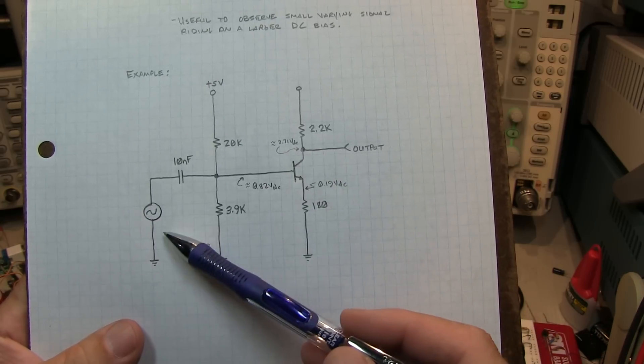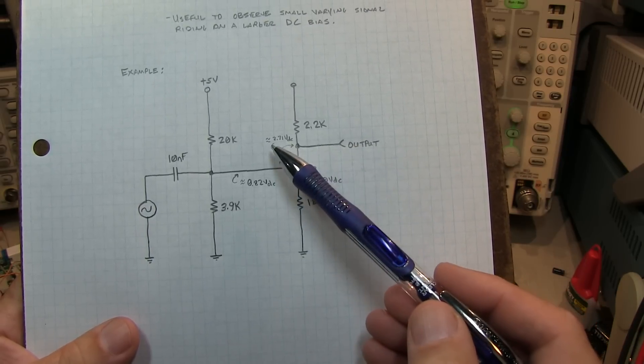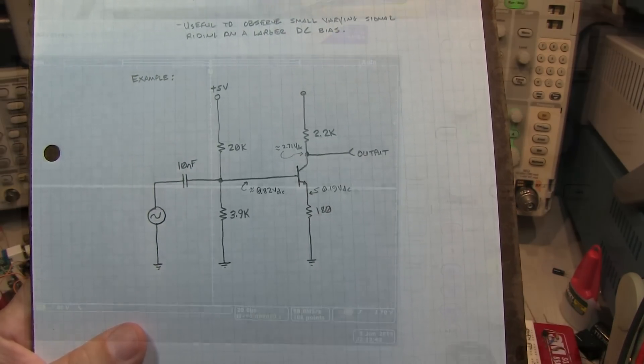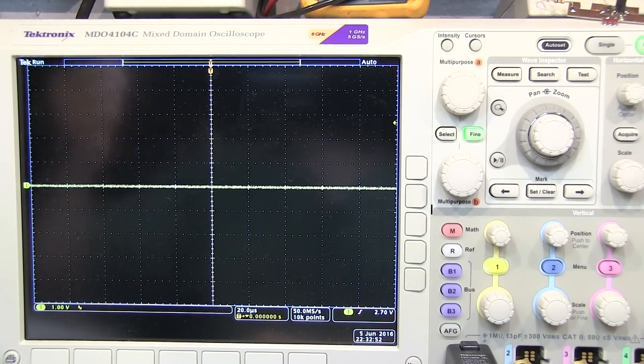gives us about a 2.7 volt bias at the output here at the collector. And the way I've got the signal source set up here, we're going to have about a 200 millivolt signal sitting and riding on top of this 2.7 volt bias. So now before we power up the circuit,